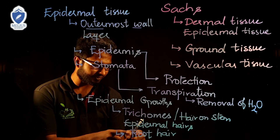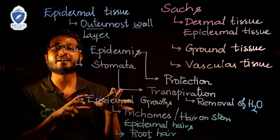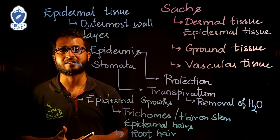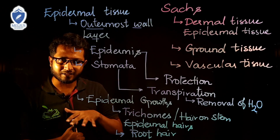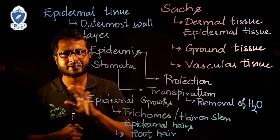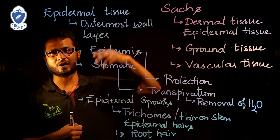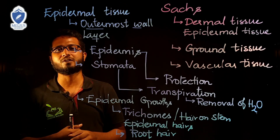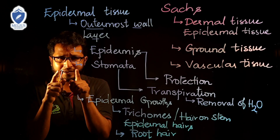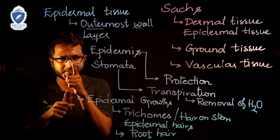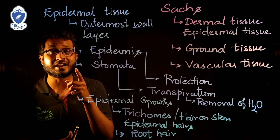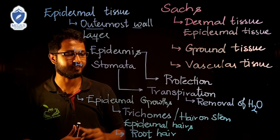The function of root hair is to help in absorption of water and minerals. Water present in the earth is absorbed by the root, but it is not the complete root — only the root hair region absorbs water. Wherever there are minute hairs on the root, that part helps in absorption of water as well as minerals.